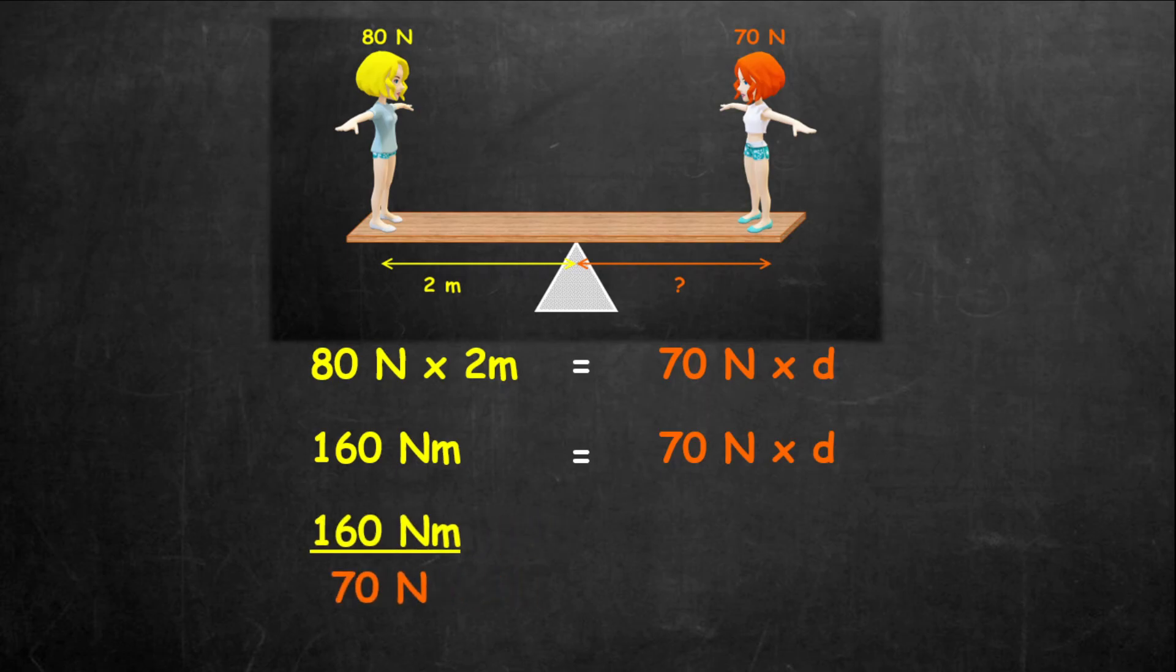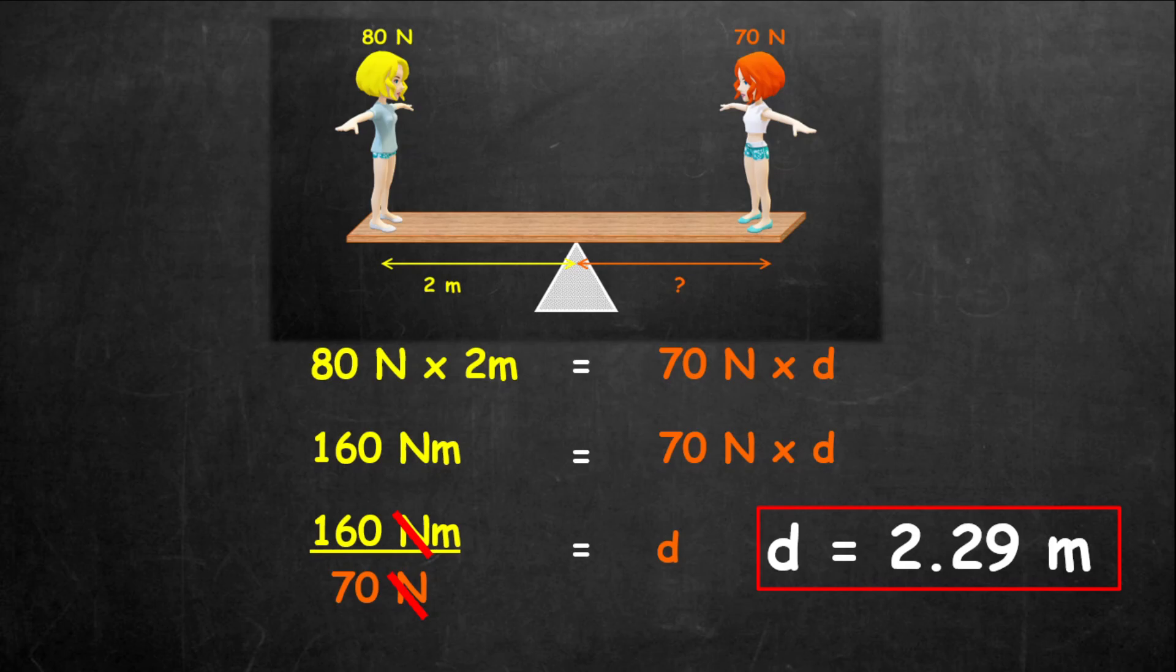Therefore, it gives 160 newtons over 70 newtons equals to D. Now, if we take away the newtons, cancel them out, what we have left is 160 over 70, which gives us D, which is Susie's distance from the pivot to be 2.29 meters.